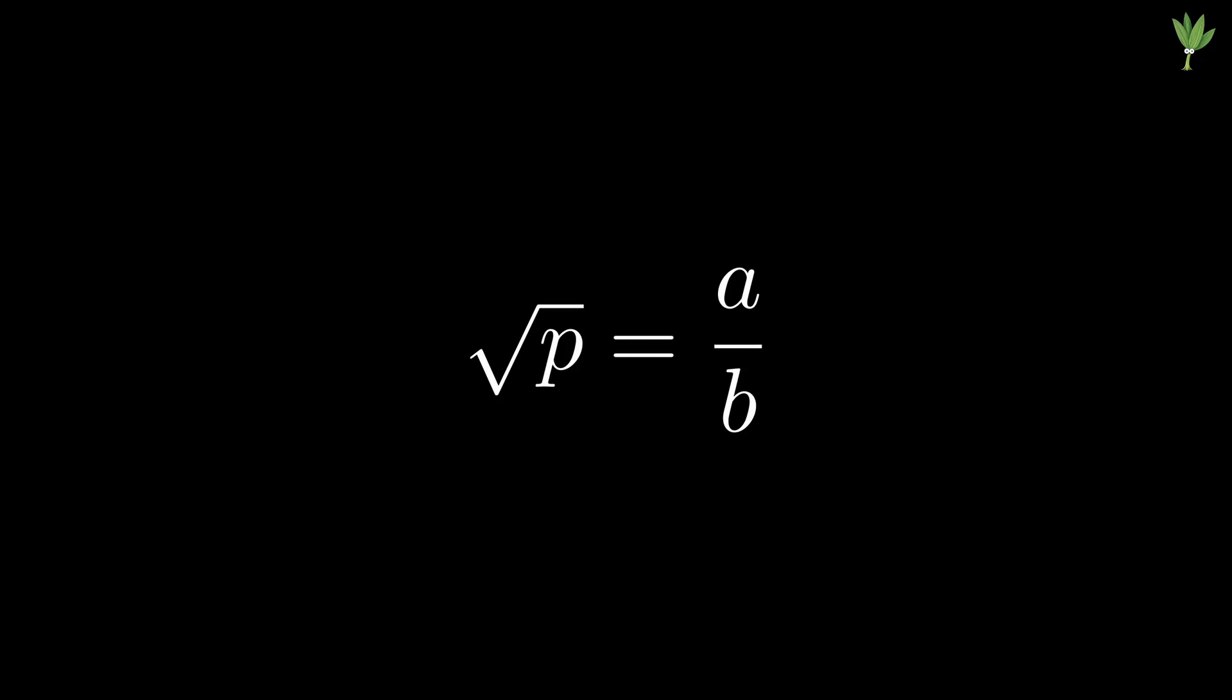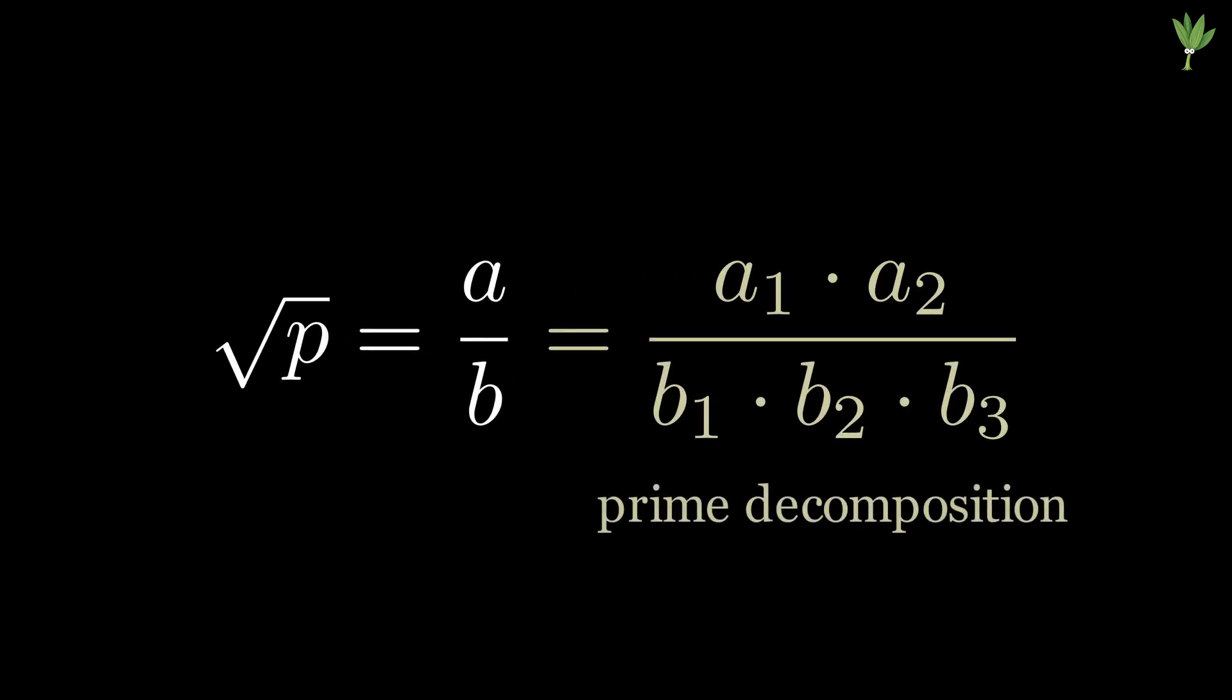Let's suppose the square root of a prime number p is rational. That means it is equal to a divided by b. a and b can be decomposed into their respective prime factors. In our example, a has two prime factors, and b has three prime factors.